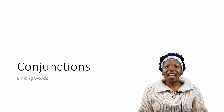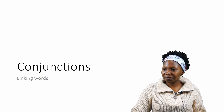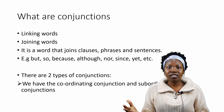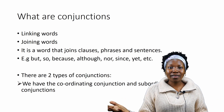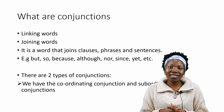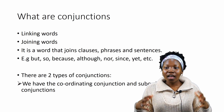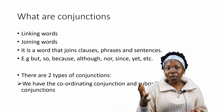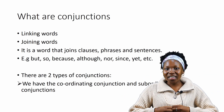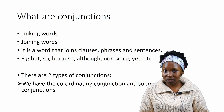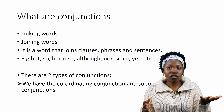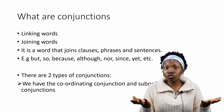Now let's look at conjunctions. What are conjunctions? Conjunctions — you will have known them as the joining words, the linking words. They are words that join clauses, phrases, and sentences together. In conjunctions, you will find words like 'so,' 'but,' 'therefore,' 'hence,' and so on. We have two types of conjunctions: the coordinating conjunctions and the subordinating conjunctions.